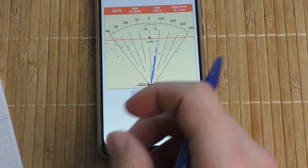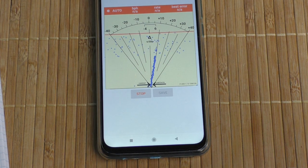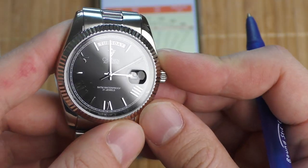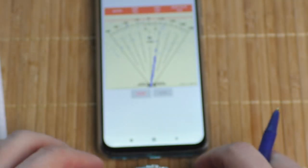Well, next one is also Cadisen, but this one has also day function, sorry not date, also Miyota movement. Let's see what it can do.